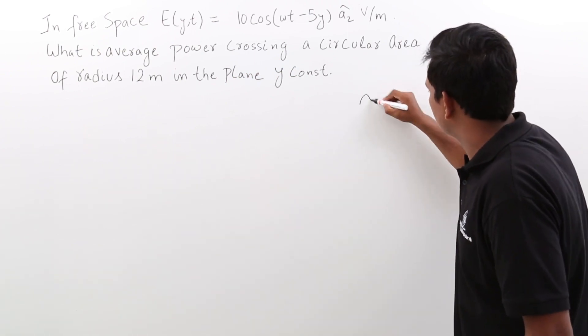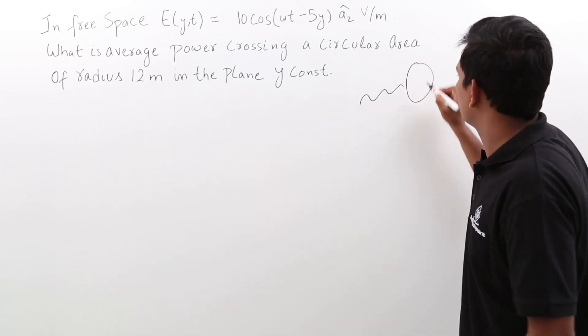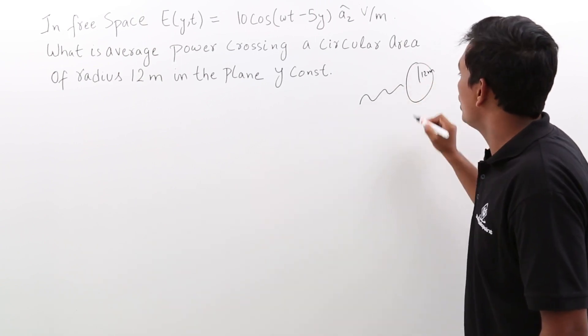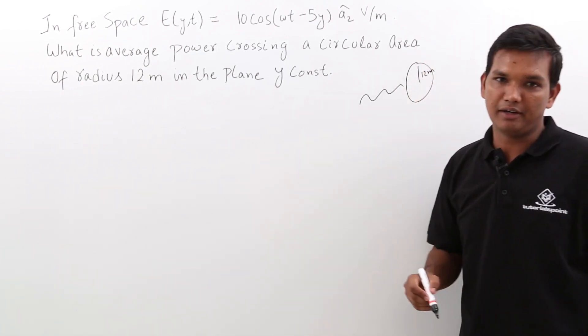Let us understand this. It is something like this. If the wave is going like this, if it is hitting a circular area of some radius, let us say 12 meter, what would be the average power across this circular area.